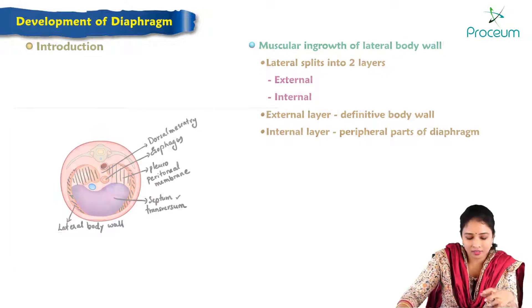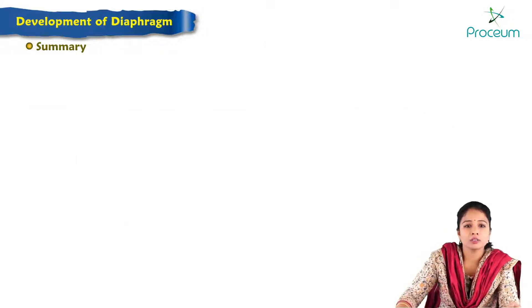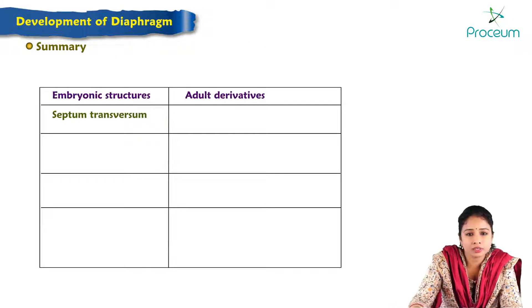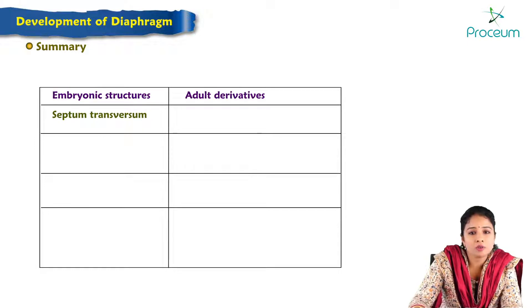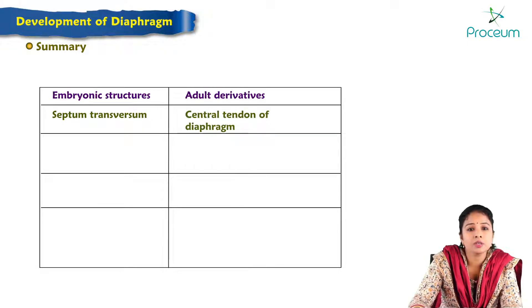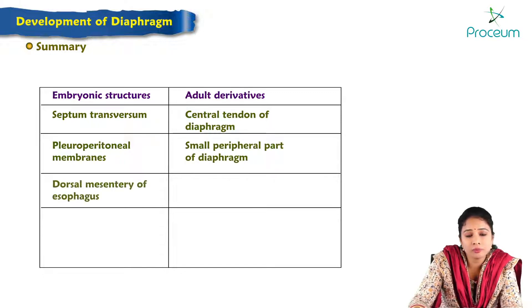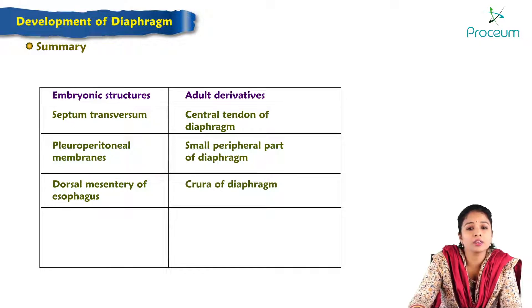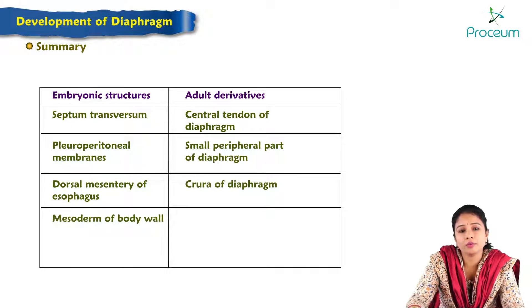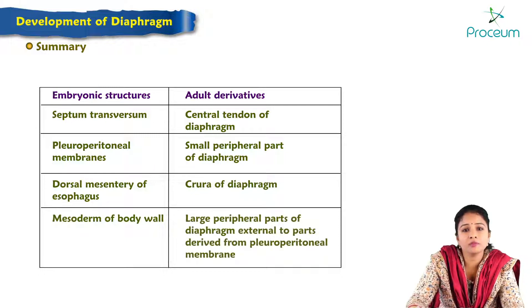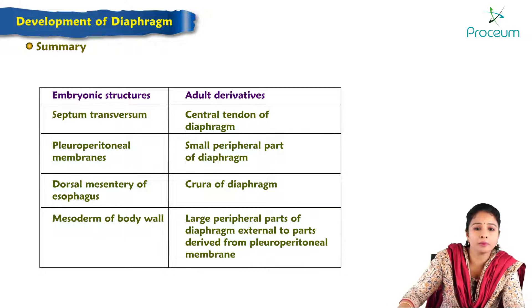To summarize the sources of the diaphragm: the septum transversum forms the central tendon; the pleuroperitoneal membranes form a small peripheral part; the dorsal mesentery of the esophagus forms the crura; and the mesoderm of the body wall forms a large peripheral part of the diaphragm.